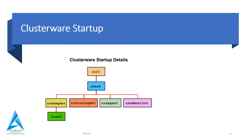The cssd agent process is started, and in turn it starts ocssd also. The cssd process discovers the voting disk, either in ASM or on shared storage. If anybody is asked an interview question about which process discovers the voting disk, the answer is: cssd agent will discover the voting disk.